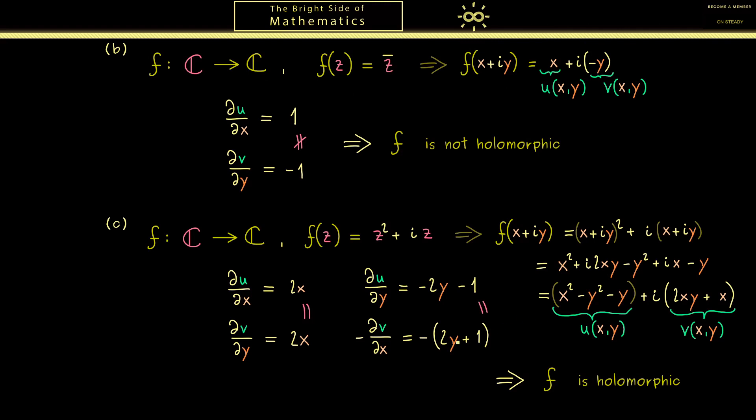However, with this example you have learned how you can apply the Cauchy-Riemann equations when the function f is given as a real and an imaginary part. And in fact you also get the complex derivative of f from these partial derivatives here. But I think this is a good topic for the next video. Therefore I really hope that I see you there. Have a nice day and bye!